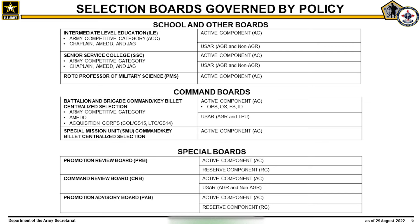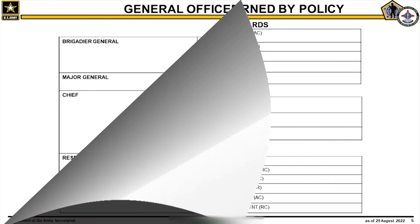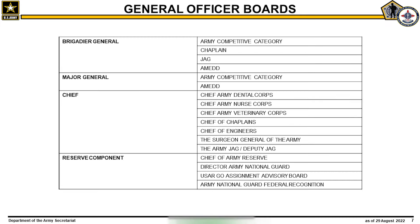Enhanced selective early retirement boards consider captains and majors, while selective early retirement boards consider lieutenant colonels and colonels. The boards identified on this slide are governed by policy, but generally mirror the board processes of statutory boards. Promotion review boards, command review boards, and promotion advisory boards convene to determine if selected officers should remain on the standing selection list. There are 17 general officer boards held at the DA Secretariat, which include Brigadier Generals, Major Generals, Chief of the Special Branches, and other boards for the Army Reserve components.